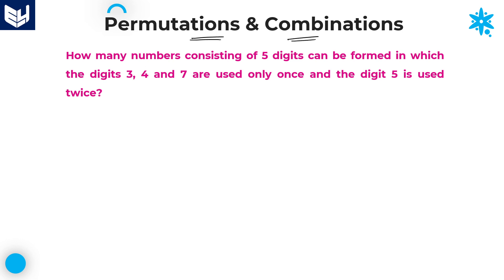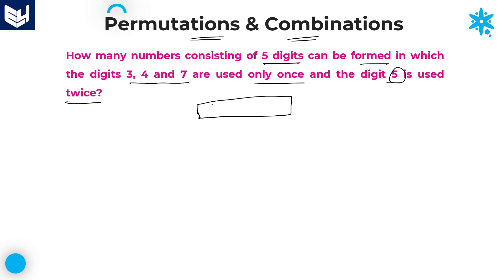This is the first question in this session. How many numbers consisting of 5 digits can be formed in which the digits 3, 4, 7 are used only once and the digit 5 is used twice? We need to form a 5-digit number using digits 3, 4, 7 — each used only once — whereas the digit 5 can be used twice.